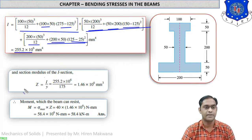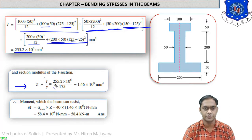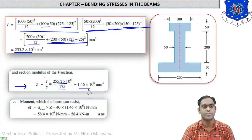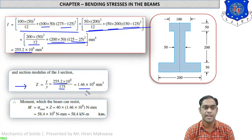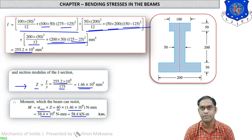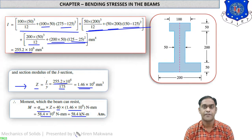Now calculate the section modulus Z = I/y = (255.2 × 10⁶) / 175 = 1.46 × 10⁶ mm³. To find the moment of resistance, use M = σ × Z. With maximum bending stress σ = 40 N/mm² and Z = 1.46 × 10⁶ mm³, M = 40 × 1.46 × 10⁶ = 58.4 × 10⁶ N·mm, which converts to 58.4 kN·m.